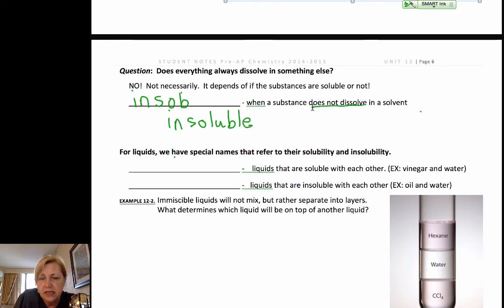When it does not dissolve, for liquids, we have very special terms. When two liquids will mix to form a homogeneous mixture, we say they are miscible. So, I like to say that liquids that are miscible are mixable. They will dissolve in one another. Like we saw before, the vinegar and water, the isopropanol in water. If they do not dissolve in one another, we say they are immiscible.